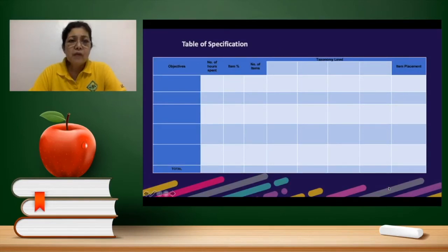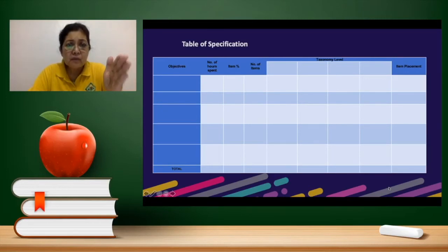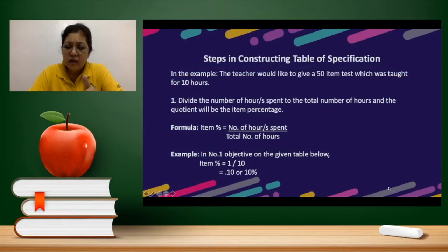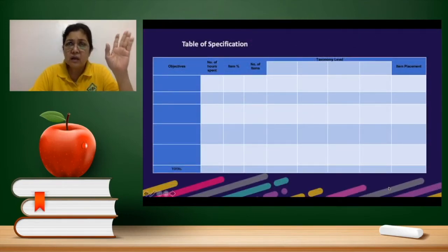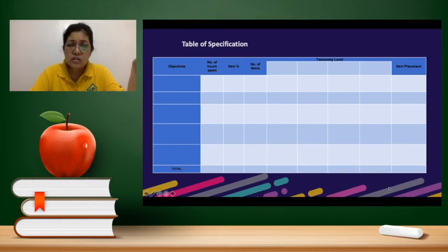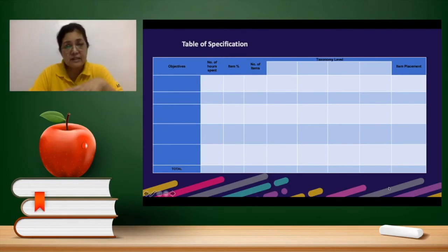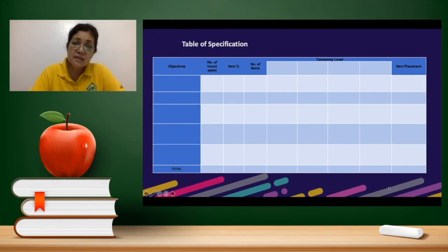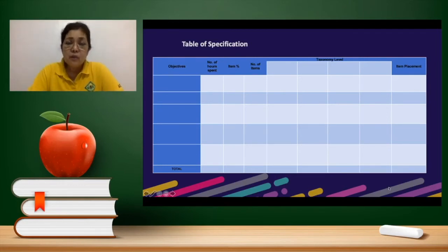Here is a sample table of specification. You can see the column for objective, the number of hours, the item percentage, and the number of items. For the taxonomy level, this refers to the cognitive domain starting from knowledge, going to comprehension — which is understanding — then application, then analysis, and then evaluation or creating, which is the highest level of complexity.